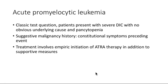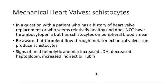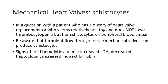Finally, if you see schistocytes in a patient with a history of heart valve replacement — aortic or mitral — along with increased LDH and low haptoglobin but only a subtle hemolytic anemia, this suggests turbulent flow from the mechanical valve is causing schistocyte formation. Don't choose a severe answer like TTP for someone who simply has a metal heart valve mechanically breaking up red blood cells.